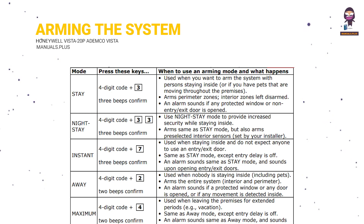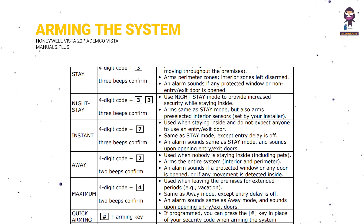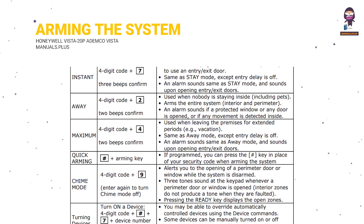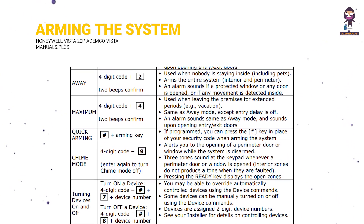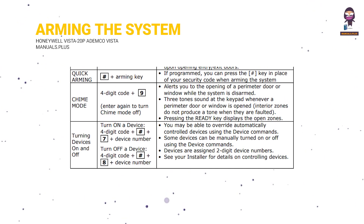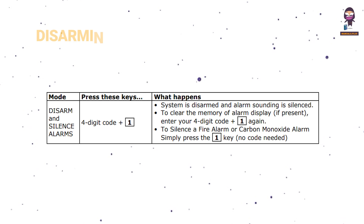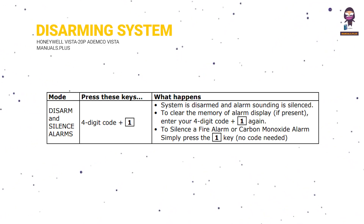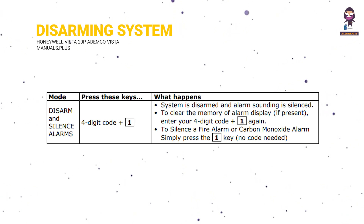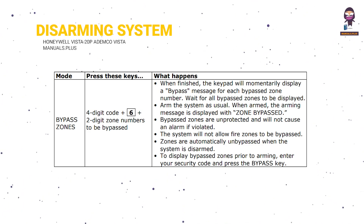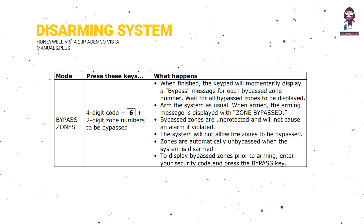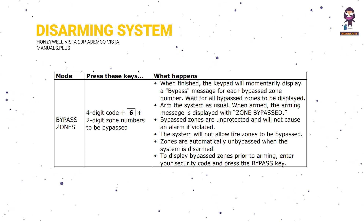Arming the system, chime mode, and controlling devices. Before arming, close all perimeter doors and windows and make sure the ready to arm message is shown. After arming, leave the premises through an entry/exit door during the exit delay period and be sure the door is re-closed to avoid causing an alarm. Disarming the system and silencing alarms: the off key is used to disarm the system, silence alarms and trouble sounds, and clear the memory of alarm displays. Bypassing zones: use the 6-bypass key when you want to arm your system with one or more zones intentionally unprotected. The system must be disarmed first.